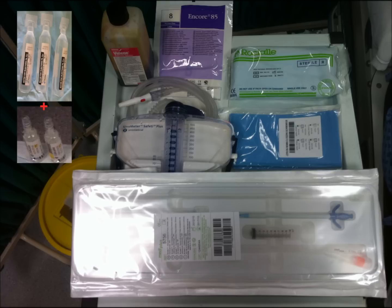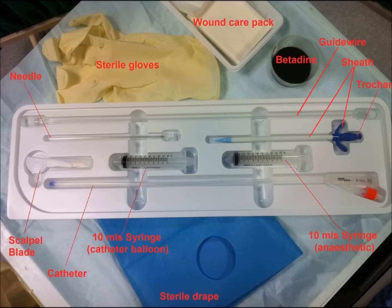Gather the necessary equipment — it is always useful to have an assistant but it is not essential. Familiarise yourself with the contents of the Seldinger pack. Unsheath the wire and the scalpel, as this is often difficult to do one-handed during the middle of the procedure.